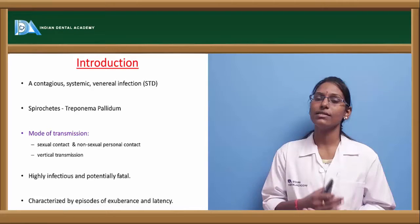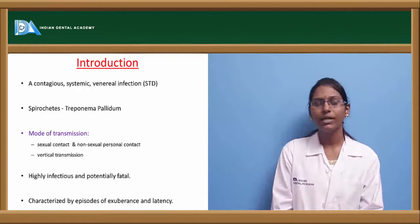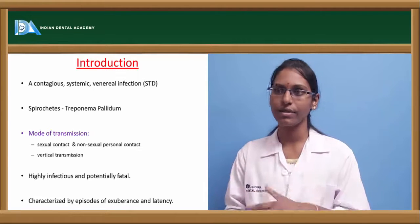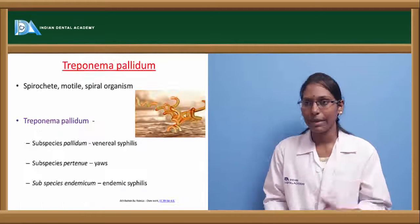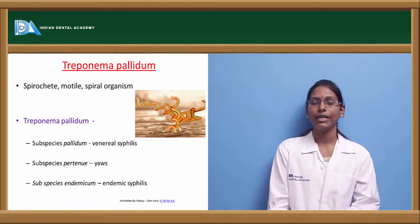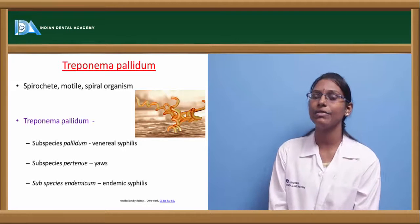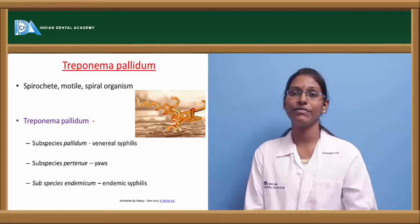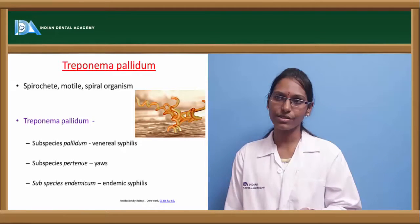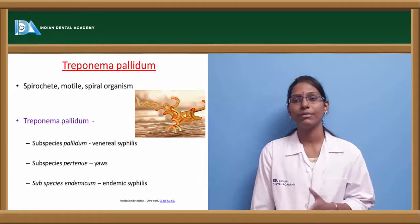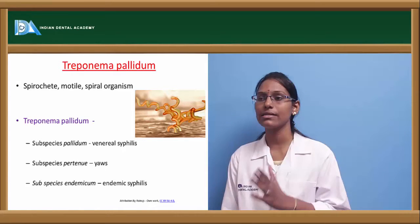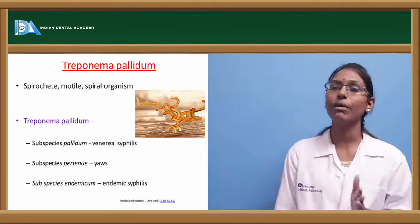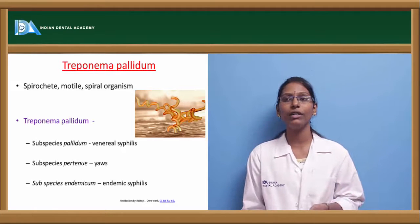If untreated, syphilis can be a potentially fatal condition. A characteristic feature of syphilis is that it has periods of latency and exuberance in its manifestation. Treponema pallidum has various subspecies causing different variants: Treponema pallidum pallidum is responsible for venereal syphilis, Treponema pallidum pertenue is responsible for yaws, and Treponema pallidum endemicum is responsible for endemic syphilis.